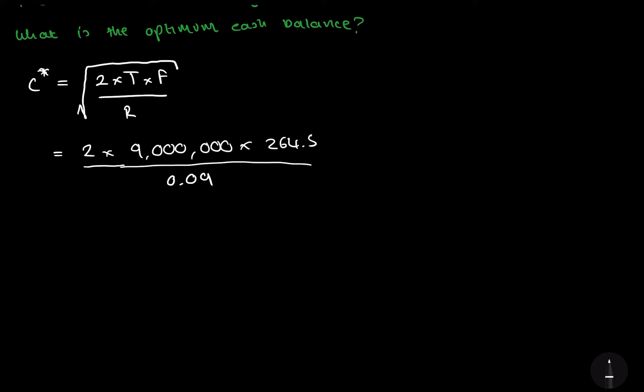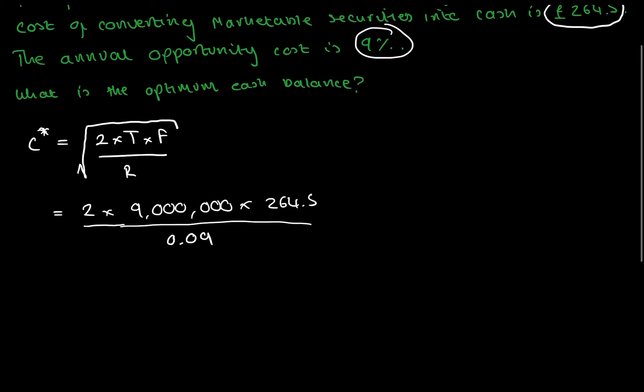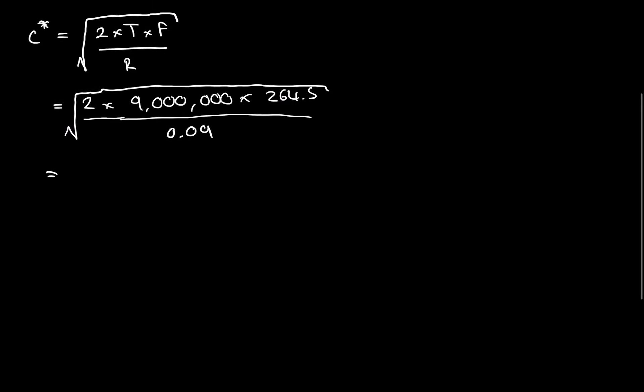0.09. You have to put 0.09 because this is percentages, this is the opportunity cost, and all square rooted. And if I get my calculator out, that works out to £230,000. So that's the optimum cash balance that should be stayed in the bank.